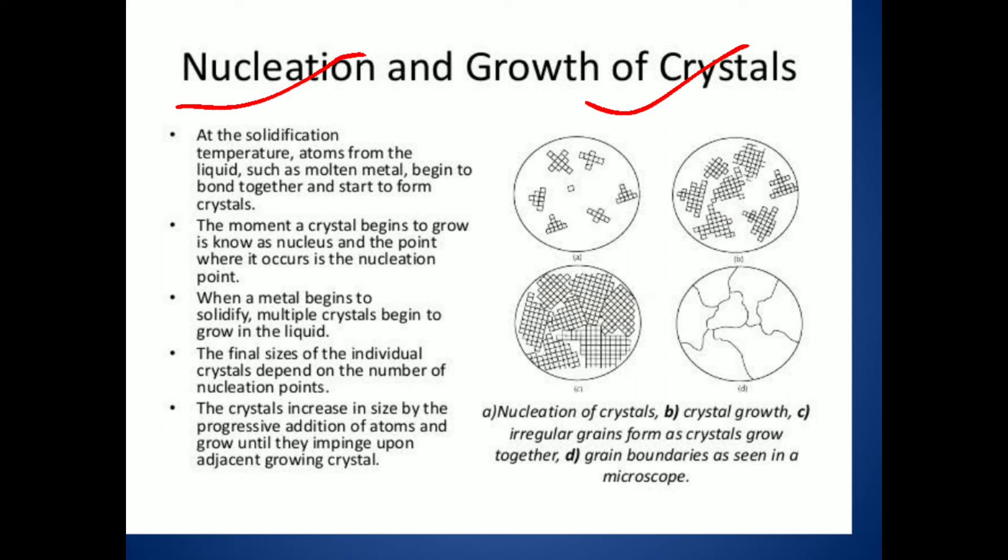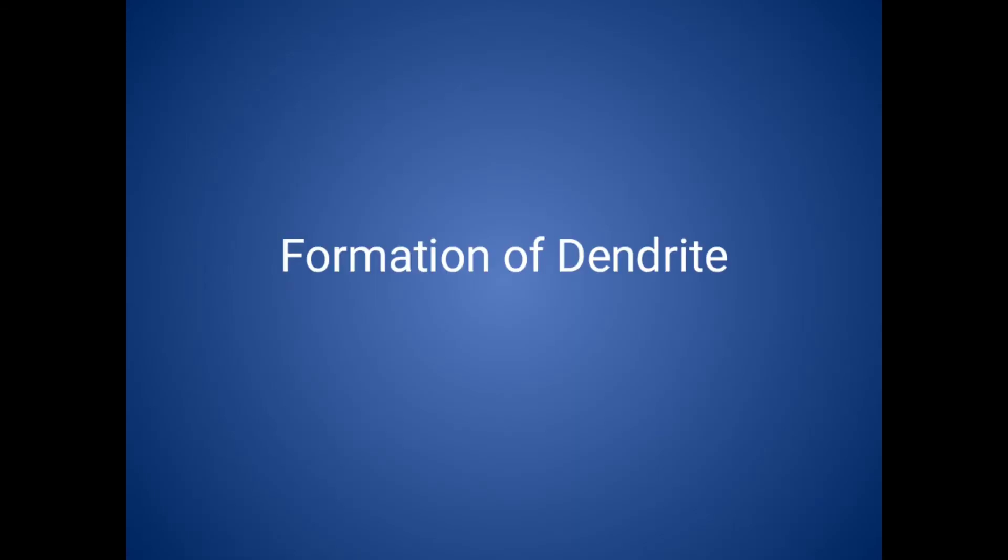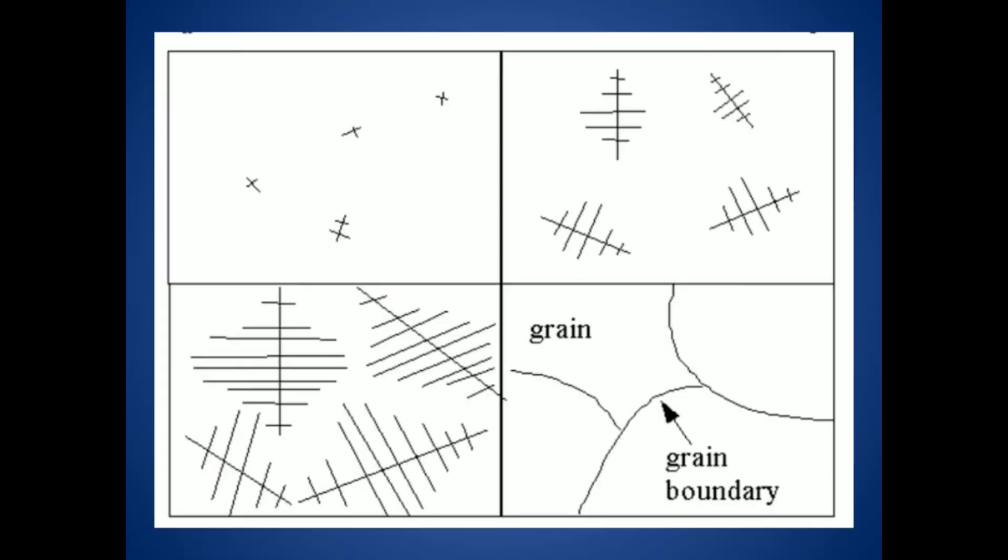After that, the nuclear points will grow in x-direction, y-direction, and z-direction - that is called growth of crystals. This is called crystallization of metals. After that is formation of a dendrite, which occurs when we are increasing grain size.